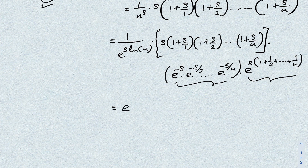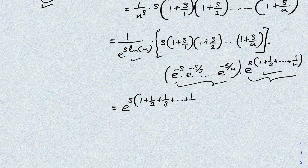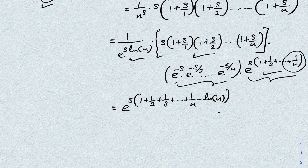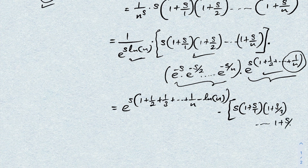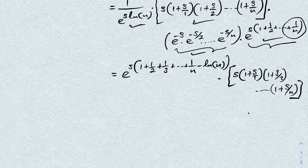After cancellation we are left with e^(s(1 + 1/2 + 1/3 + ··· + 1/n − ln n)) times s · (1 + s/1)(1 + s/2)···(1 + s/n) times e^(−s) · e^(−s/2) ··· e^(−s/n).